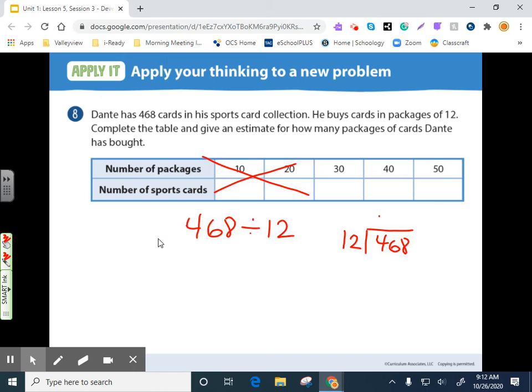So 12 doesn't go into 4. But 12 will go into 46. Let's try it. If we do by 4, this gives us 48. So that's too big. And 12 times 3 is 36. So that's the way to go with that one. Bring down your 8. So 12 goes into 108. Let's try 9 because I know 9 times 2 is 18. 9 times 1 is 9 plus 1 is 108. Okay. And there we go. The answer is 39.